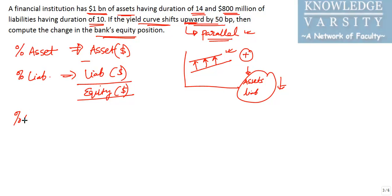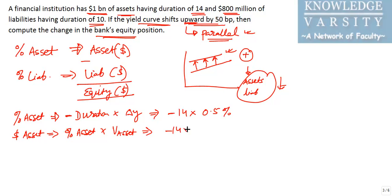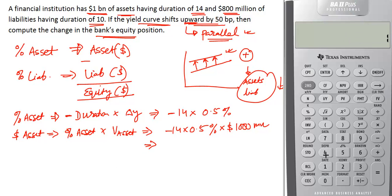The percentage change in asset is given by: minus duration times change in yield. So that's minus 14 times 50 basis points, or 0.5%. The dollar change in asset equals the percentage change times the value of the asset. So we have: minus 14 × 0.5% × $1 billion (or 1,000 million).